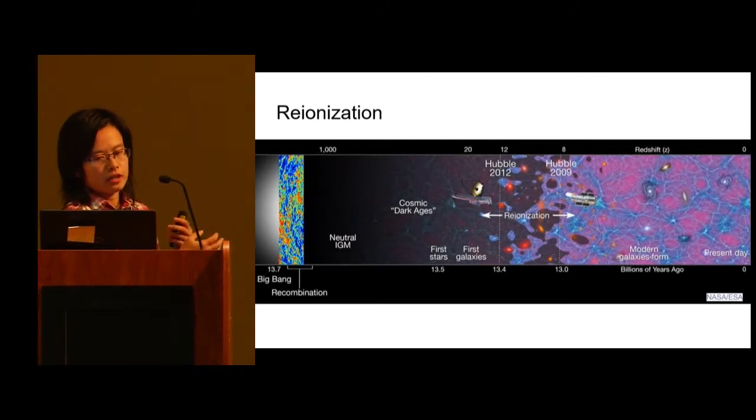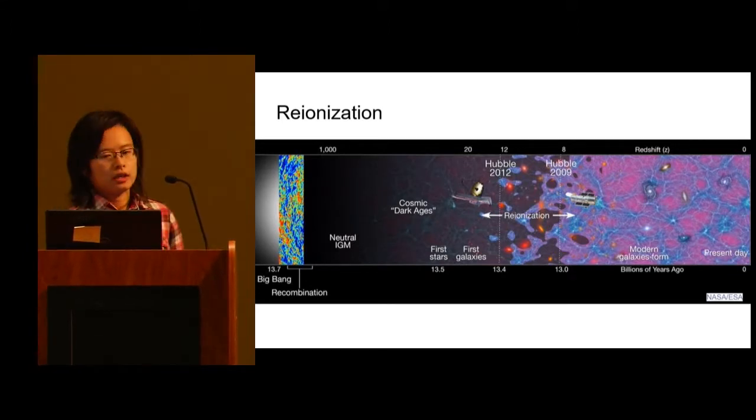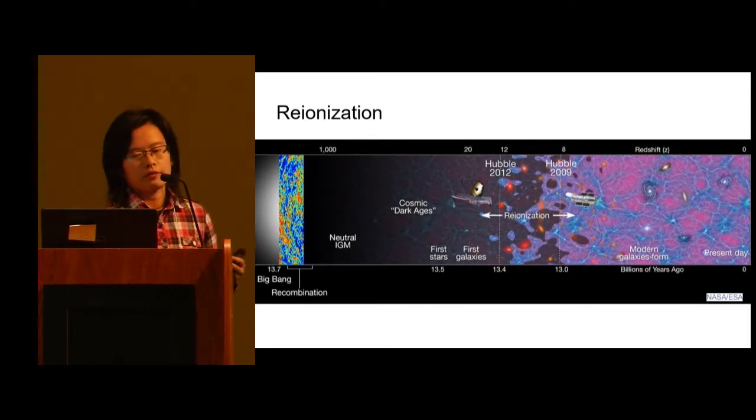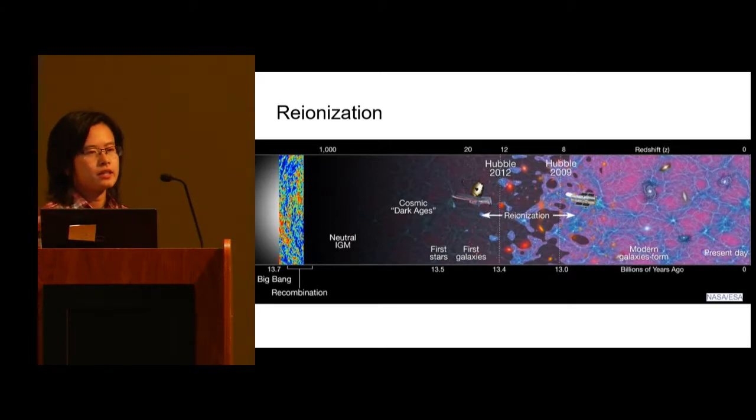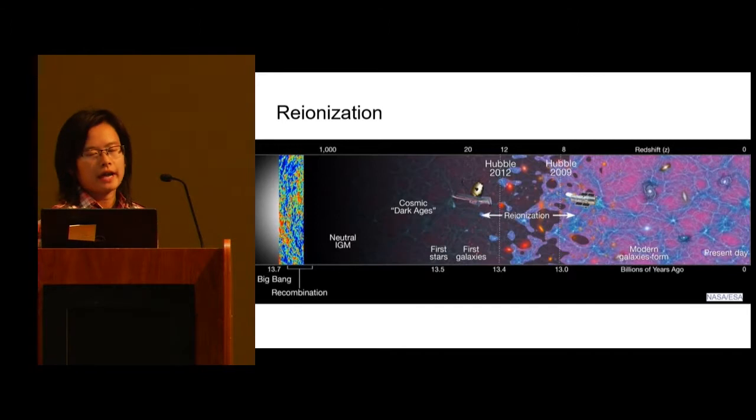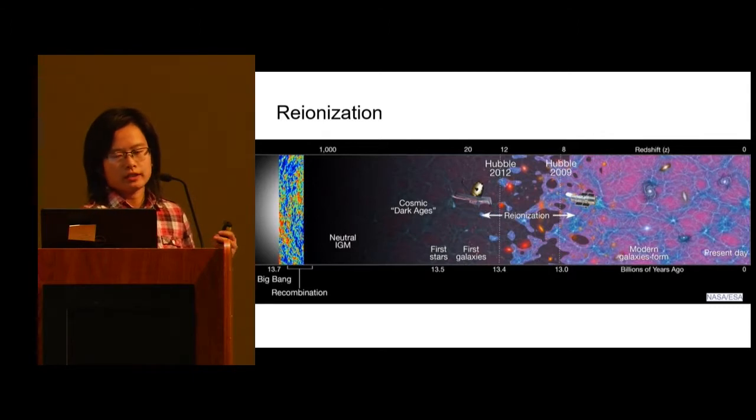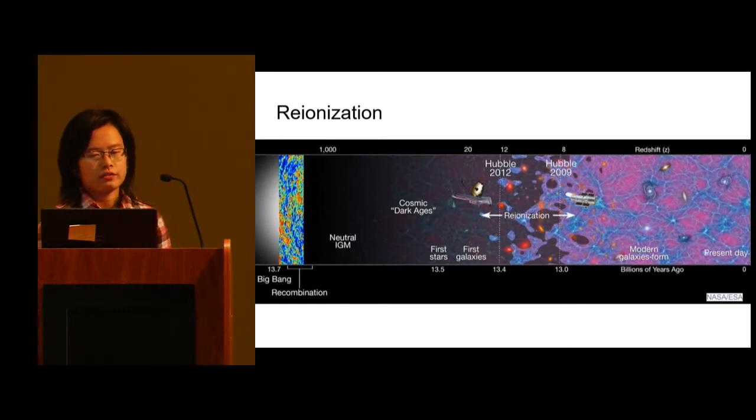During the so-called dark ages, gravity slowly pulls stuff together and forms the first objects like stars, quasars, and galaxies. Radiation from these objects ionizes the gas again. This phase is called reionization, which brought about the second major phase transition from a mostly neutral universe to a mostly ionized universe.